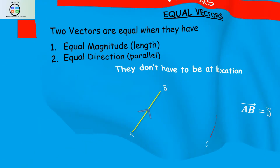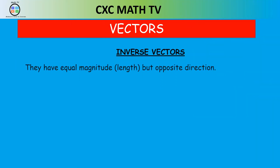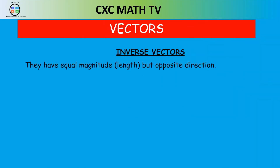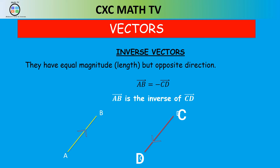The next thing to talk about is inverse vectors. Inverse vectors have equal magnitude but are going in the opposite direction. For example, going from A to B and going from C to D — these two vectors have the same length but go in opposite directions. So in this case we say AB is the inverse vector of vector CD, and in other words vector AB is equal to negative vector CD.